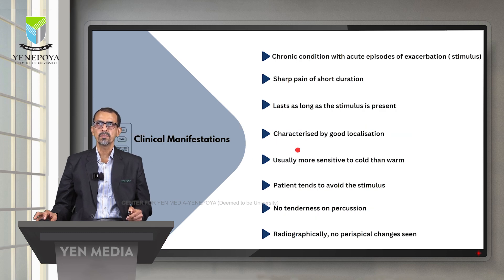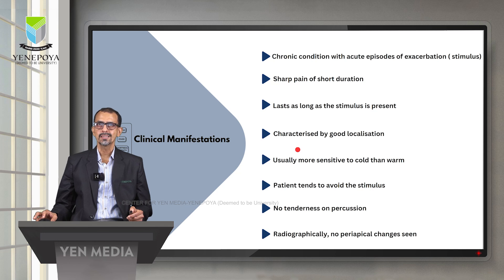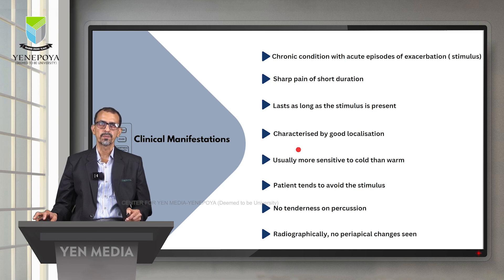The clinical manifestations of dentinal sensitivity include a chronic condition with acute episodes of exacerbation depending on stimulus availability at the site. It is generally a sharp pain of short duration, lasting as long as the stimulus is present, and is characterized by good localization — the individual can identify the specific site. It is usually more sensitive to cold food than warm, patients tend to avoid the stimulus, and there is no tenderness on percussion or periapical changes on radiographs.